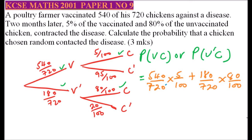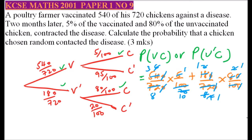We can simplify these fractions step by step. For the first term, simplifying 540/720 × 5/100, we reduce to get 3 over 80. For the second term, simplifying 180/720 × 80/100, we reduce to get 1 over 5.